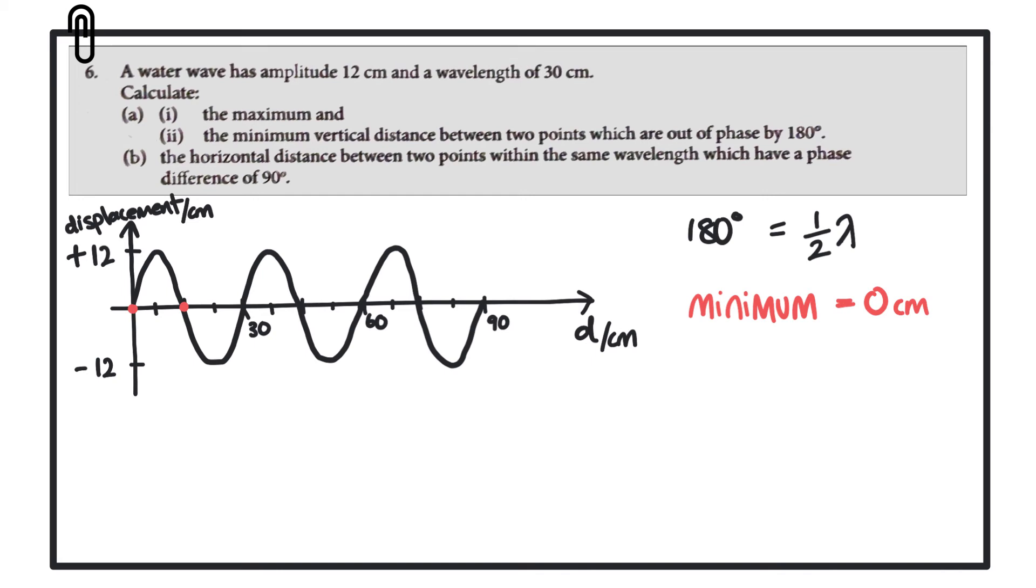If we consider the next point at a quarter of a wavelength, then we'll see that this is now at the crest of the wave and the amplitude of the wave is 12 centimeters. We have a distance of 12 centimeters from the rest position.